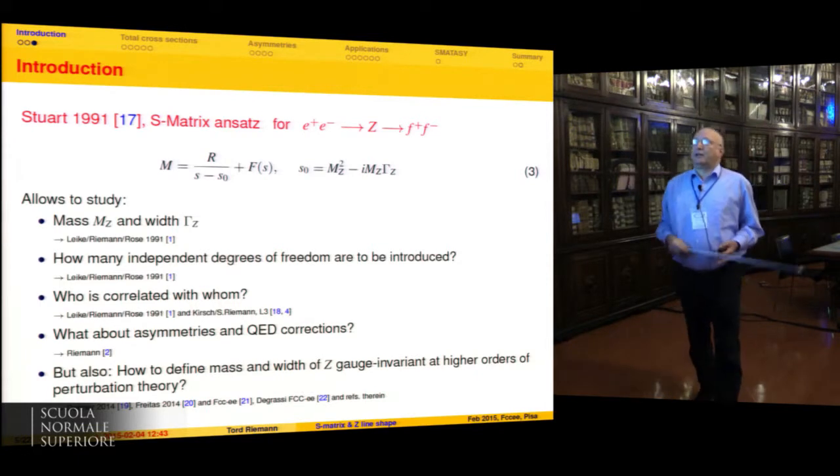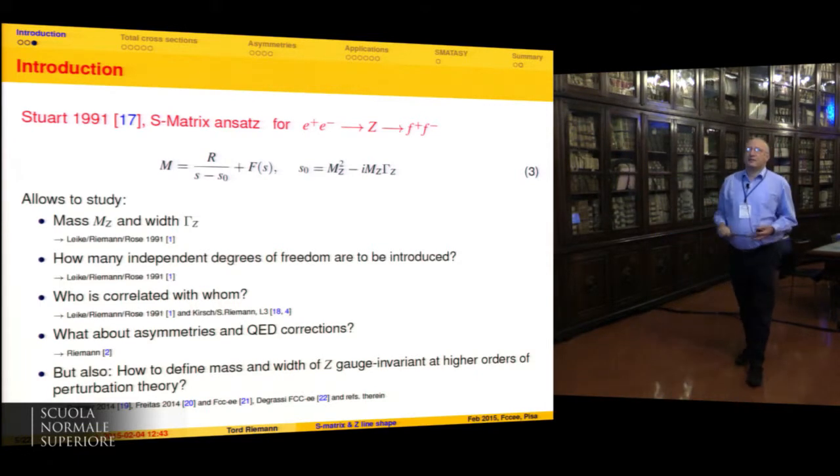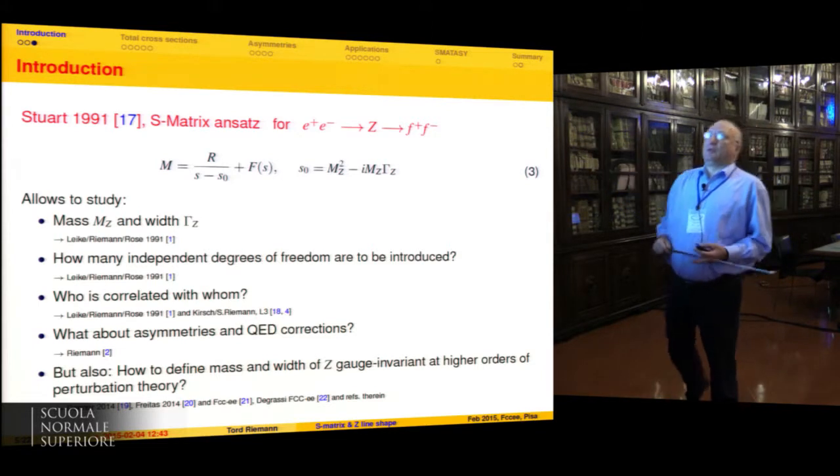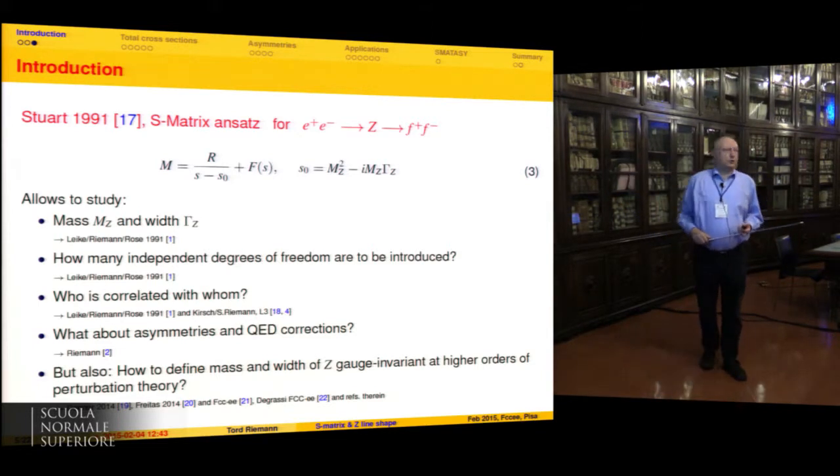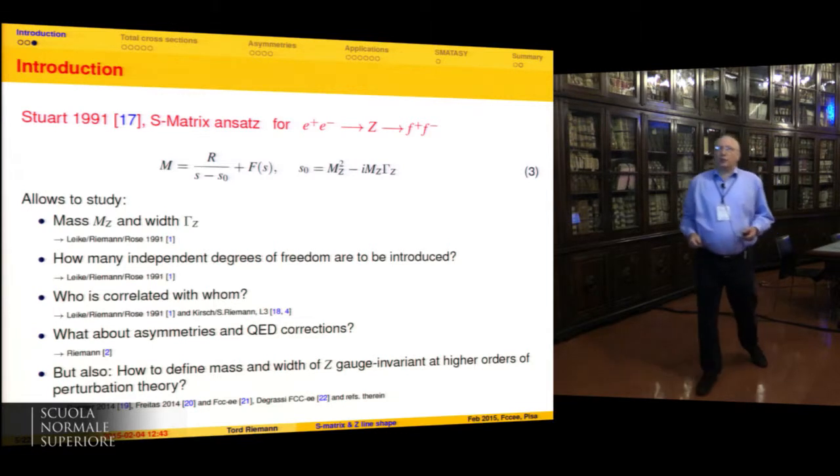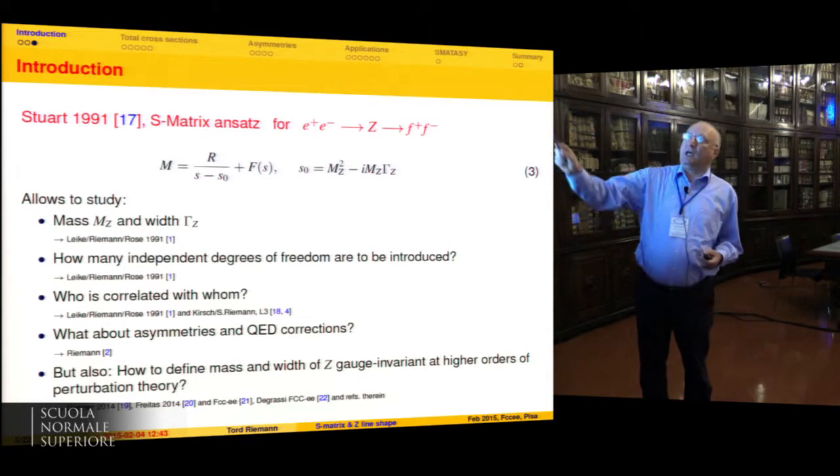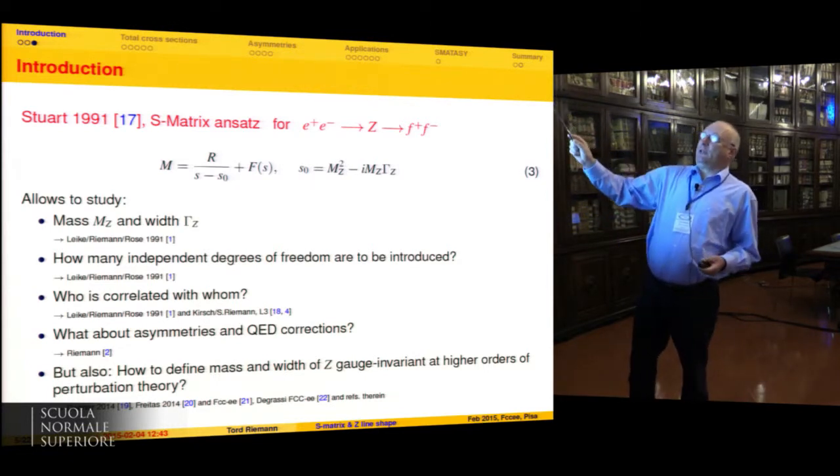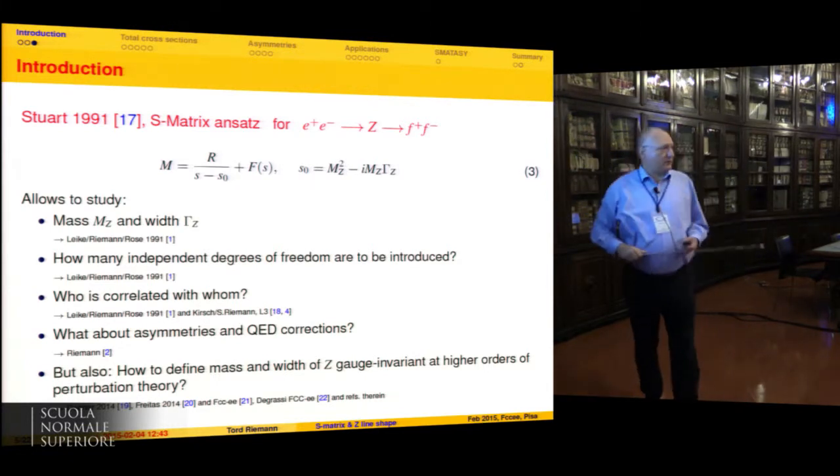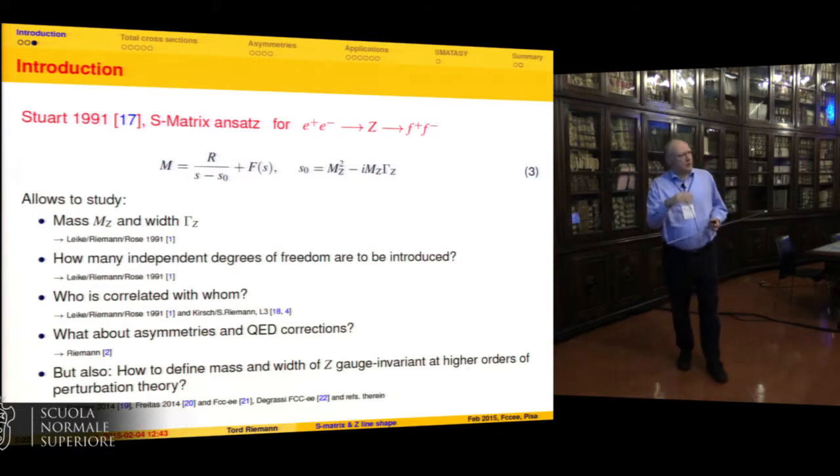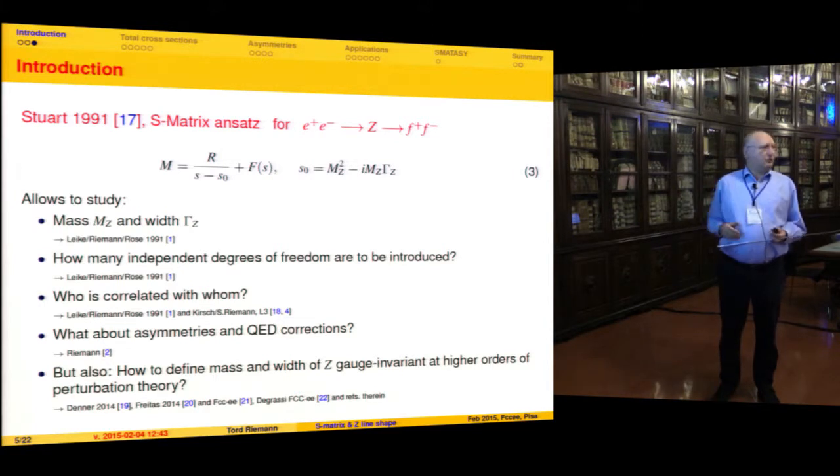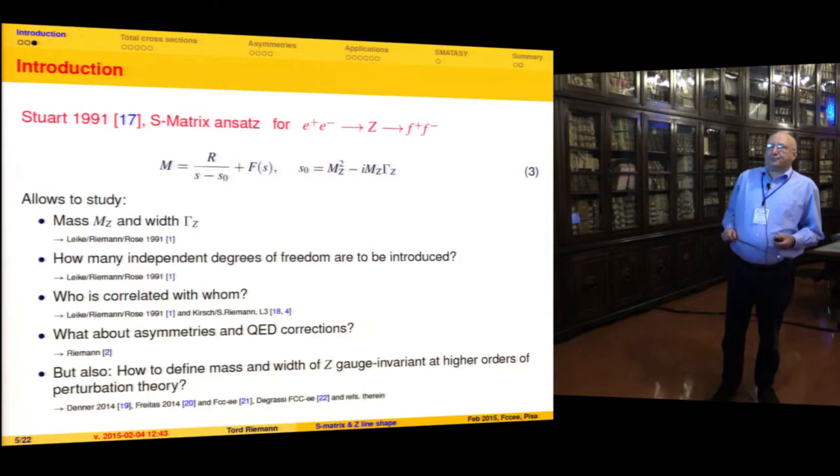That was really studied by people who wanted to make two-loop calculations. Then you really have to care what you are calculating. I think Stuart was the first one who proposed something to do. This discussion goes on until now. We had already yesterday two talks where this was mentioned. Stuart proposed in 1991 to study for this question of gauge invariance the amplitude of the Z-boson physics in the complex plane, which should be according to general theorems of quantum field theory a Laurent series, with the pole location defined through mass and width of the Z-boson.